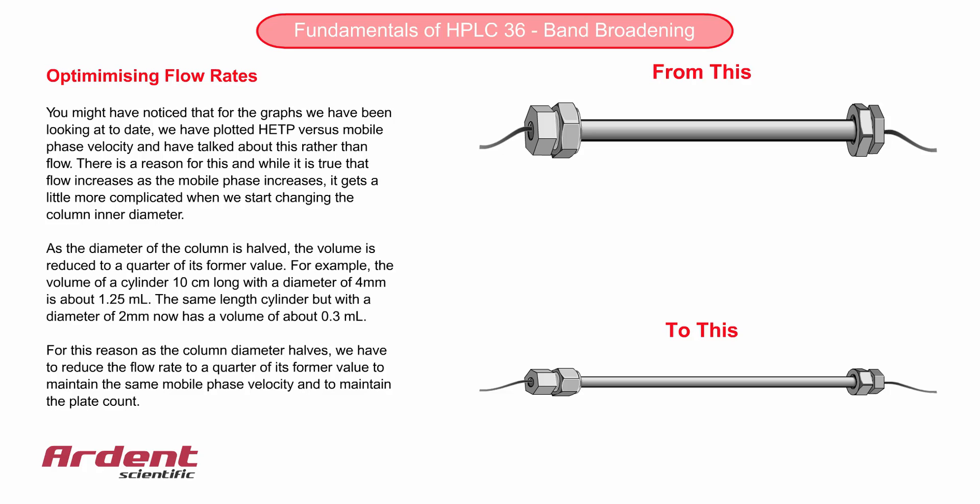For this reason, as the column diameter halves, we have to reduce the flow rate to a quarter of its former value to maintain the same velocity, and therefore to maintain the same plate count.